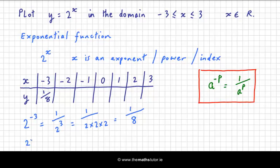We have 2 to the power of minus 2, which is 1 over 2 squared, which is 1 over 4. So I can fill that in as well. When x is minus 1, we have 2 to the power of minus 1, which is 1 over 2.